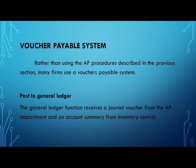The voucher payable system is a method for authorizing the disbursement of cash. A voucher is filled out that identifies what is to be paid for, the amount to be paid, and the account number to be charged. Once this voucher is approved, the disbursement system is authorized to issue payment.